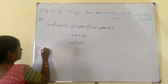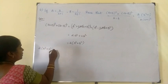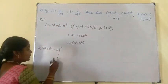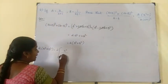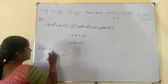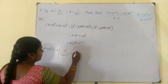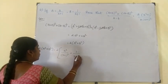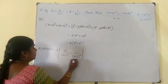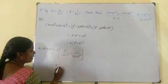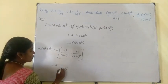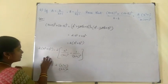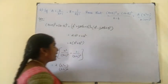Now I have to find the value of 2 into a square plus b square. A square: substitute a equals x by x plus 1, so a square equals x square by x plus 1 the whole square. B square: substitute b equals 1 by x plus 1, so b square equals 1 by x plus 1 the whole square. Taking the common denominator x plus 1 the whole square, we get 2 into x square plus 1 by x plus 1 the whole square.